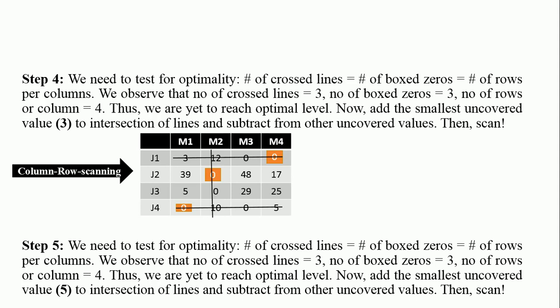By following the process, the smallest uncovered value is 5 in this case. Subtract from uncovered values: 5 minus 5, 39 minus 5, 48 minus 5, 17 minus 5, 29 minus 5, 25 minus 5. You also add this smallest uncovered value to the points of intersection of lines. There is an intersection at j1-m2 with value 12, so 5 plus 12 gives 17. There is also an intersection at j4-m2 with value 10, so 10 plus 5 gives 15.